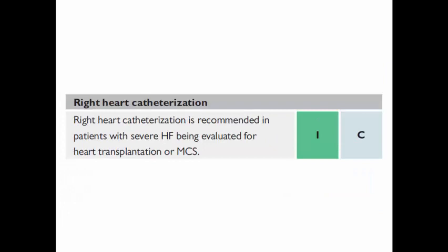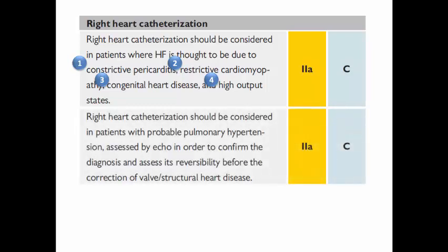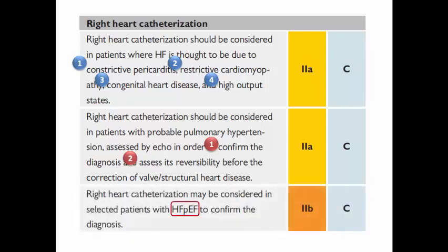Right heart catheterization is essential in severe heart failure patients being evaluated for heart transplantation or mechanical circulatory support. It has class 2A in patients with suspected constrictive pericarditis, restrictive cardiomyopathy, congenital heart disease, or high-output heart failure — where echocardiography alone is insufficient. It should also be considered in suspected pulmonary hypertension to confirm diagnosis and assess reversibility before correcting valvular or structural heart disease, and has class 2B in HFpEF to confirm diagnosis alongside echo and cardiac MRI.